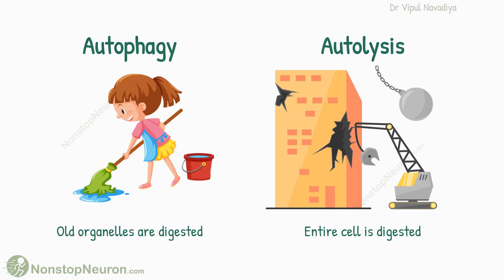In summary, autophagy is a regular housekeeping process of the cell in which old, obsolete organelles are digested. Autolysis is the digestion of the entire cell when the cell is damaged to such an extent that it cannot be repaired.